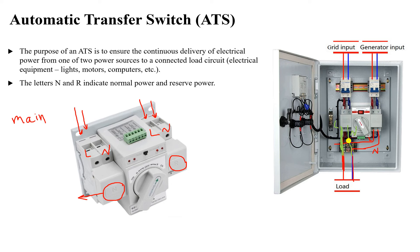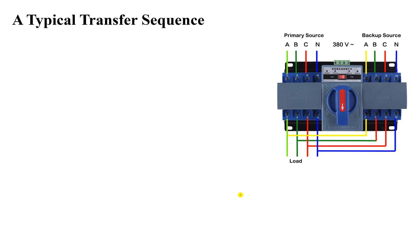The automatic transfer switch operates only one of these sources at a time — electrical power can come from the primary source or from the backup source, but not both simultaneously. For a three-phase automatic transfer switch, N is the normal power and R is the reserve power. The primary source is three-phase plus neutral, and the outputs are connected in parallel — line A to A, B to B, C to C, and neutral to neutral.